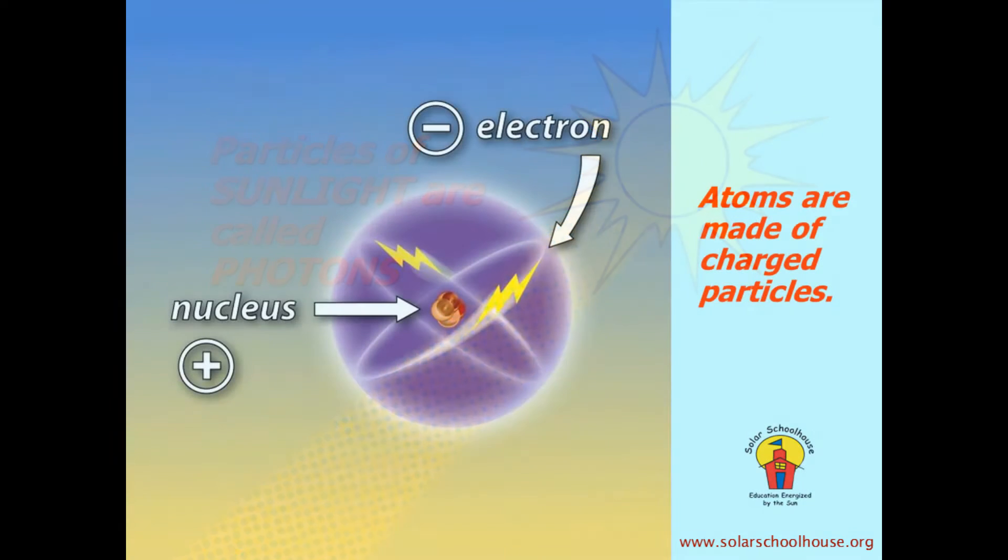Remember, everything in the world is made of incredibly tiny particles called atoms. Atoms are so small, you can't even see them with a standard microscope. And atoms themselves are made of even smaller particles, some of which are called electrons.